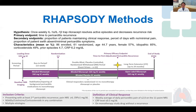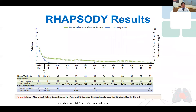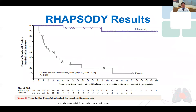Those with clinical response are then randomized to continuing Rilonacept versus switching to placebo, with the primary endpoint of time to first recurrence analyzed at 12 weeks and a long-term extension study ongoing at two years. In the run-in period, Rilonacept again showed rapid and sustained reduction in pain and inflammation. And in the trial period, here is the survival curve for the primary endpoint.